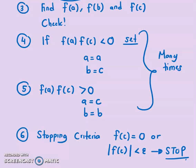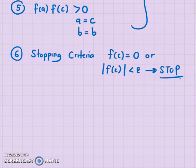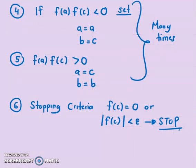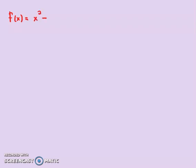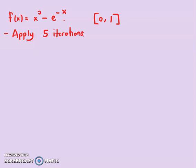Now let's solve one example. The equation we want to solve is f(x) = x² − e^(−x), and we are given the interval [0, 1]. We want to apply 5 iterations. So A = 0 and B = 1. We want to find the root of this function, which is a nonlinear equation — we can only use iterative methods such as the bisection method.